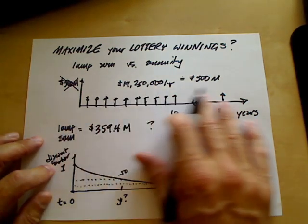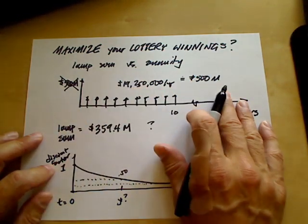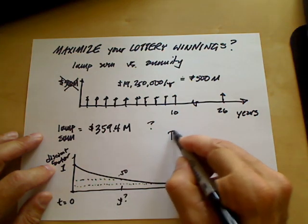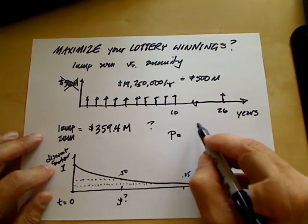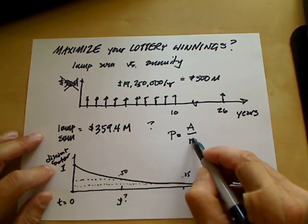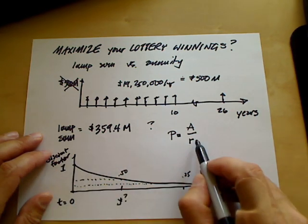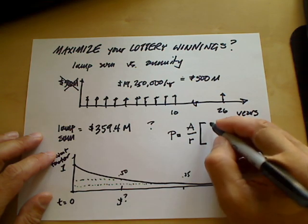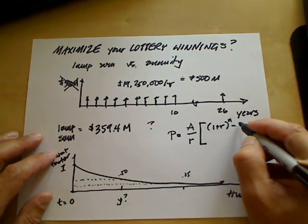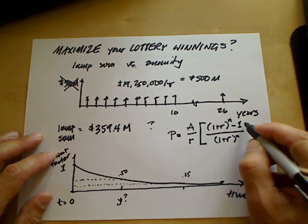How do we calculate the equivalence of $19.25 million for 26 years in present value terms? There is an equation for that: P, the present value, equals A, the annuity amount, divided by R, the discount rate, multiplied by 1 plus R to the power of N (number of years), minus 1, all over 1 plus R to the N.